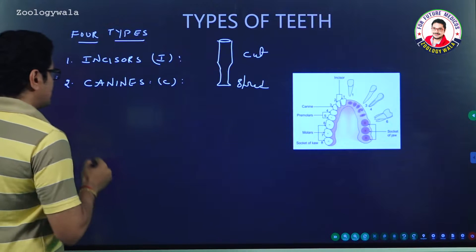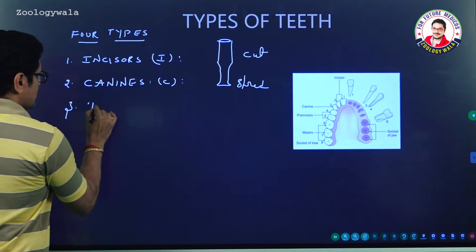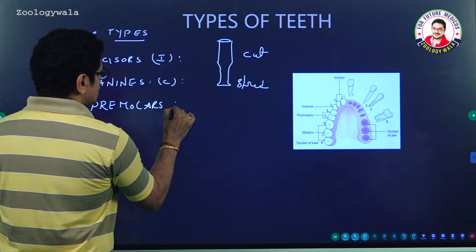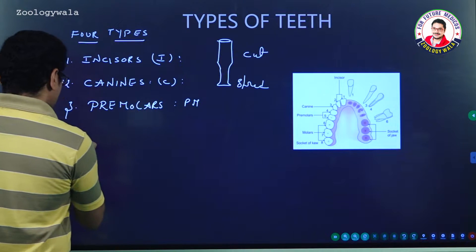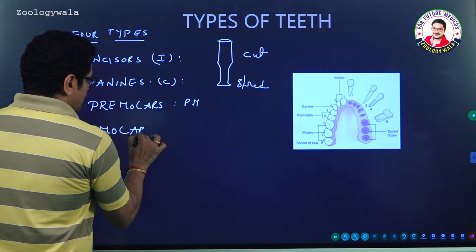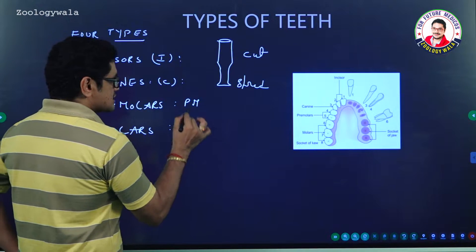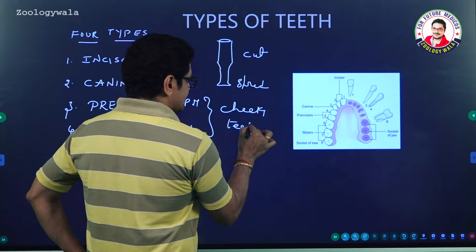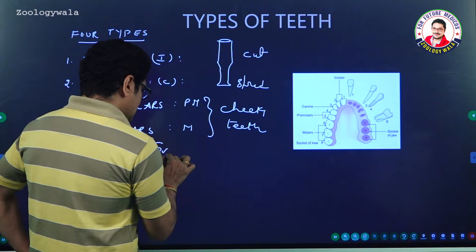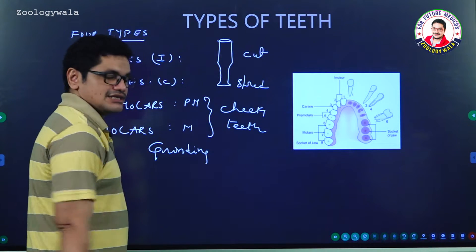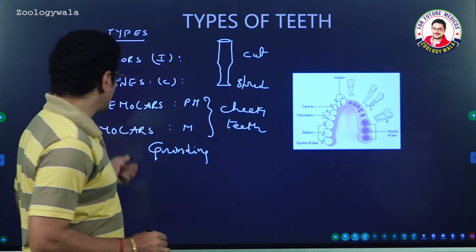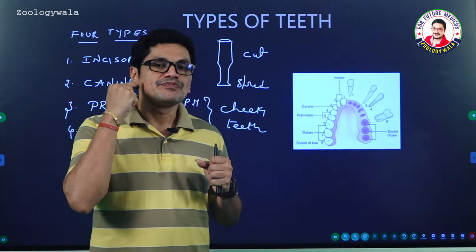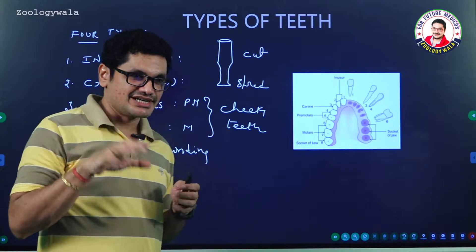The third type is premolars, represented with 'PM', and the fourth type is molars, represented with 'M'. Premolars and molars are commonly called cheek teeth, and these are useful for grinding the food material. That is the reason why premolars and molars are called grinders — they are useful for chewing the food material and are present inside the cheeks.